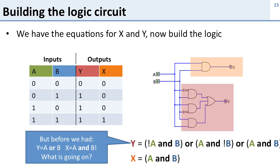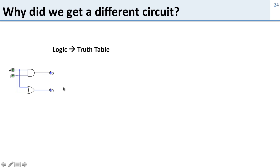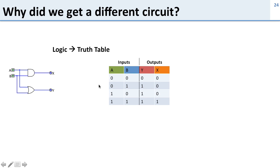This is the same circuit we had before, but we came up with this complicated formula. Before, we just had a OR b and a AND b. So why do we have this complicated formula? Let's take a step back. We started out with a simple circuit — one AND gate and one OR gate, where y was the output of OR and x was the output of AND.